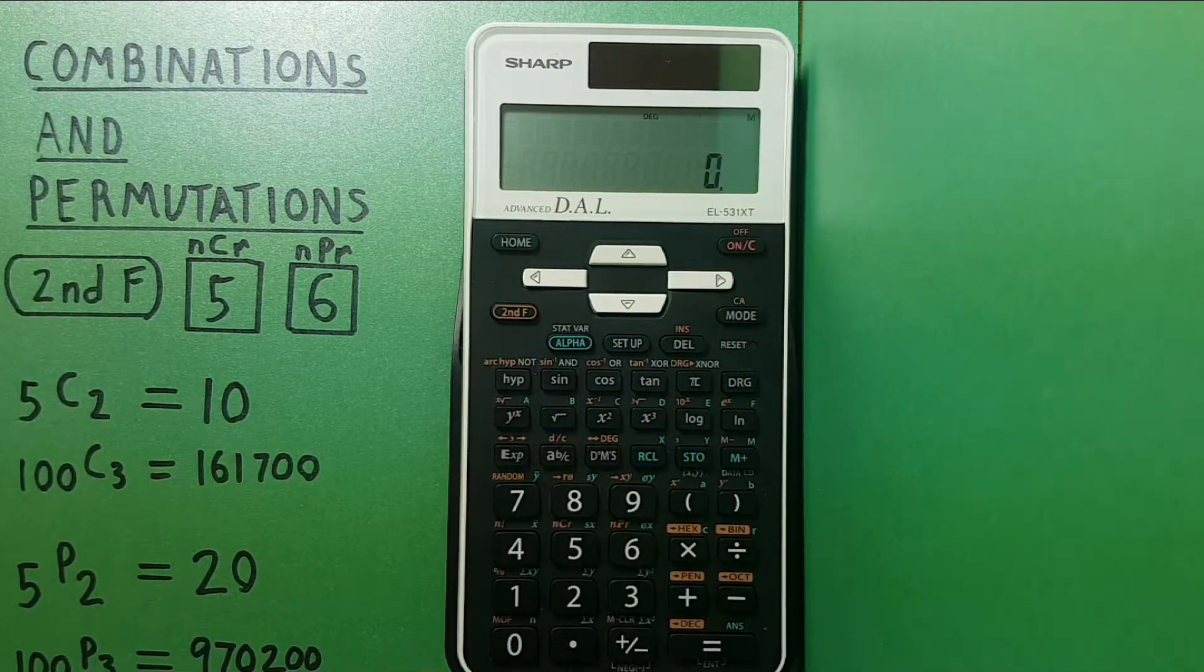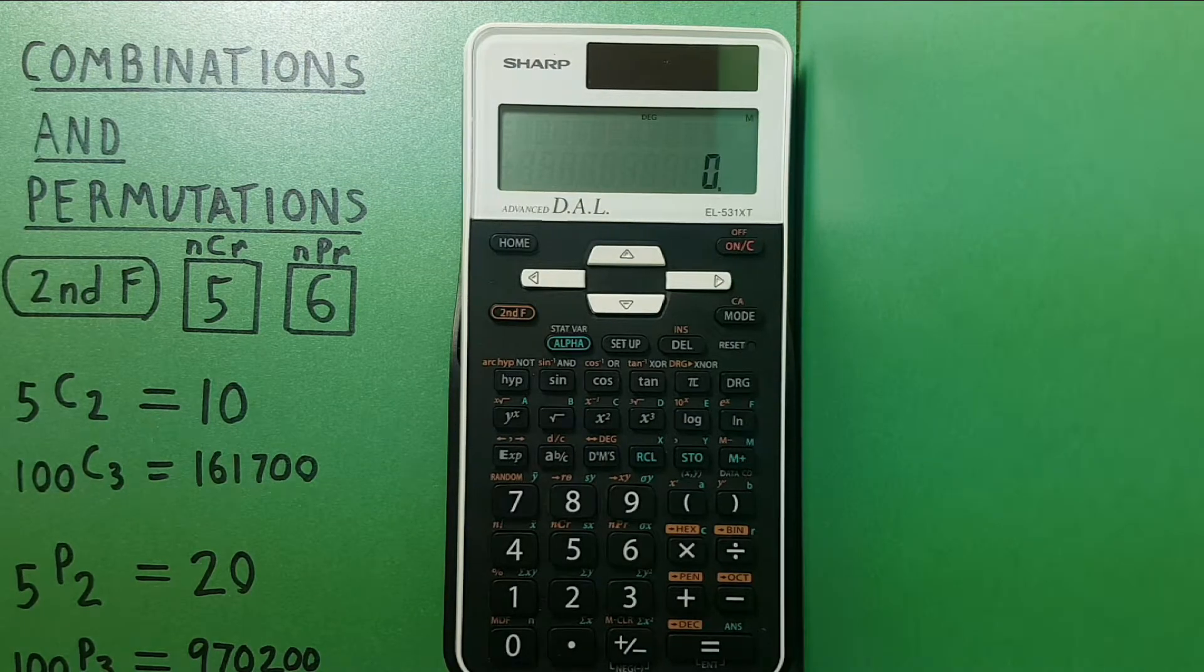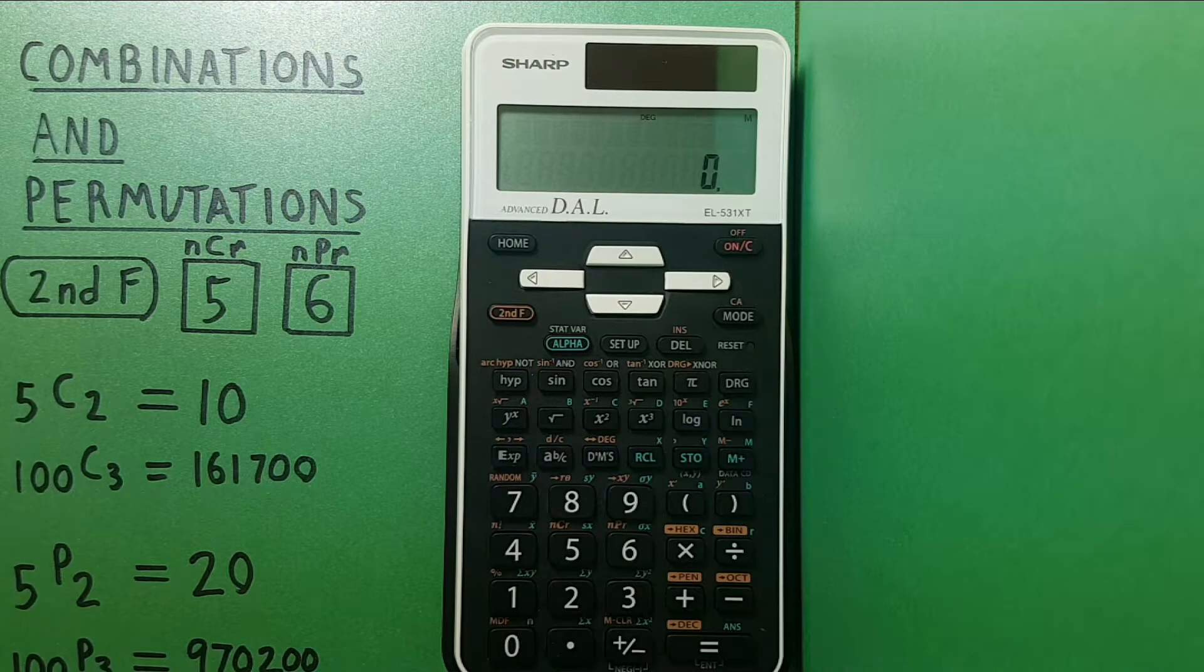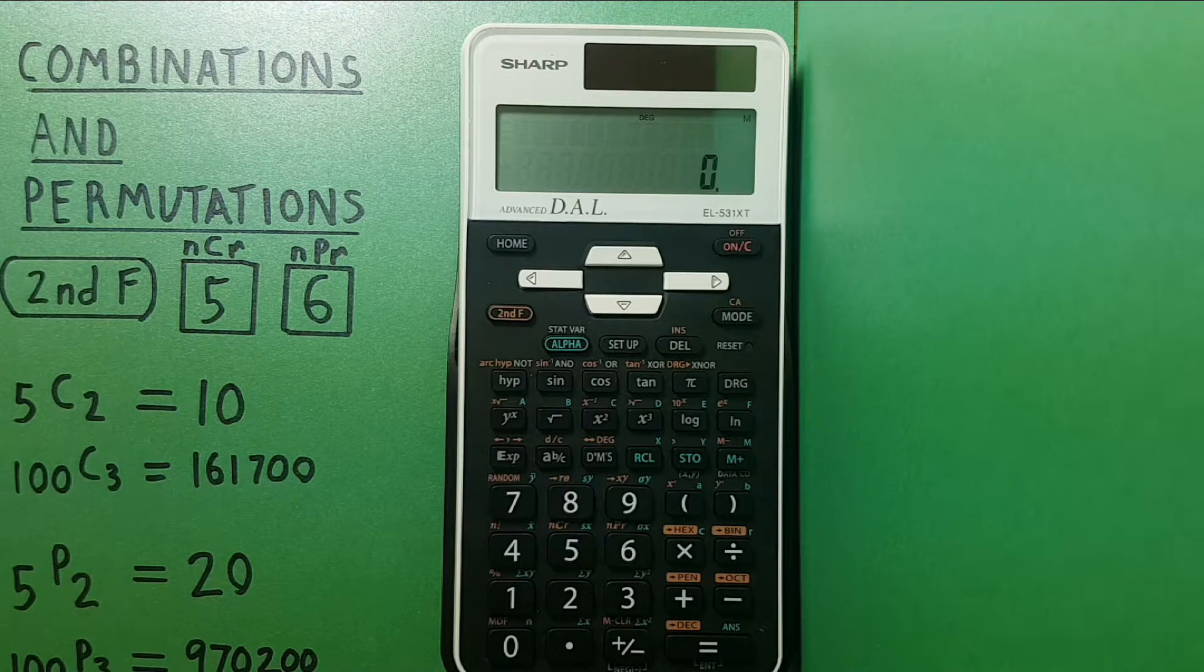How about permutations? A permutation is similar to a combination except the order that an object is chosen does matter in this case.